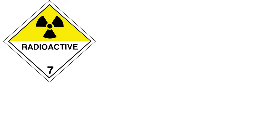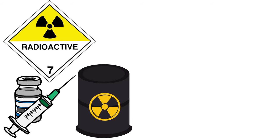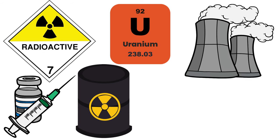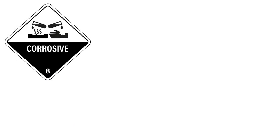Class 7 covers Radioactive Materials — materials that emit harmful radiation. Medical isotopes and nuclear fuel are typical examples; radioactive materials like uranium require special handling due to their potential health risks. Class 7 materials are primarily associated with the nuclear industry and healthcare, used in cancer treatment, imaging, and energy production. Strict regulations and safety protocols are in place to minimize radiation exposure.